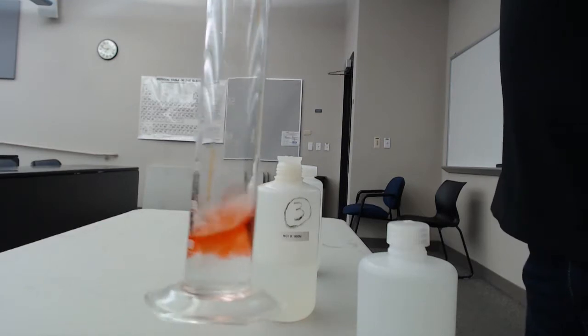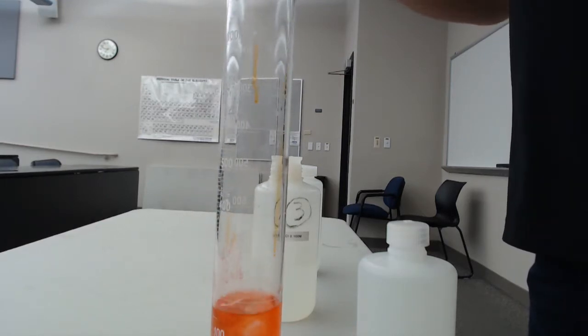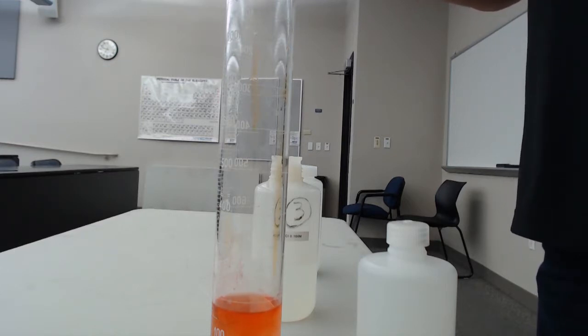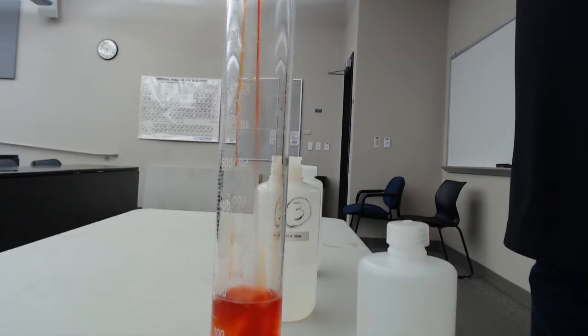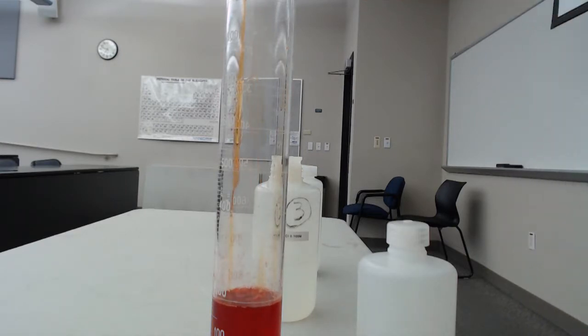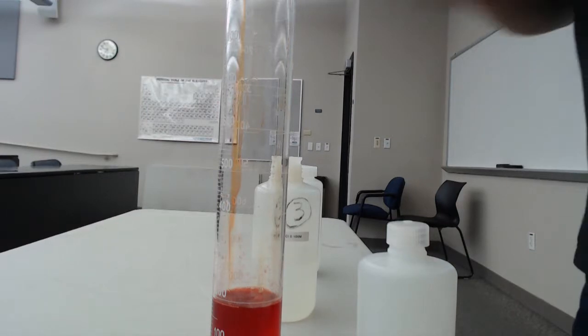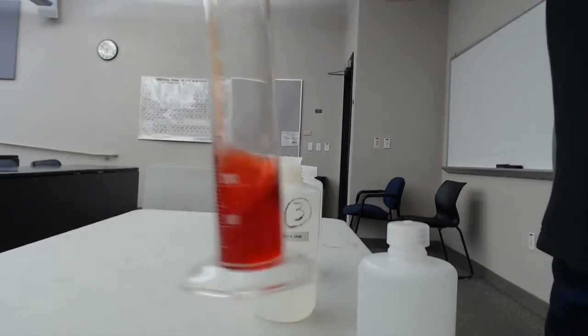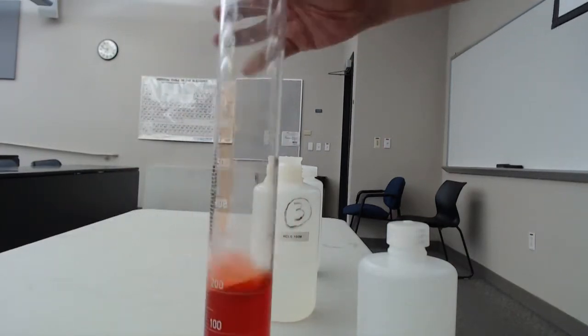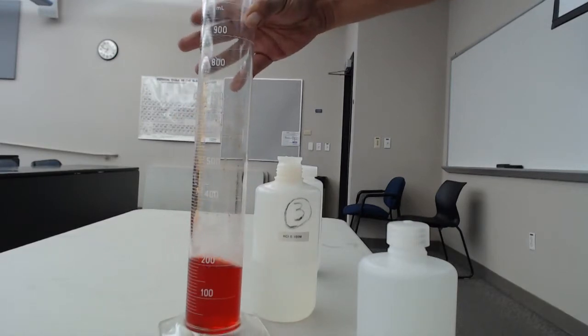I'm just gonna add enough in here so we can actually see it really deep color. You guys will learn about this a little bit more in 121, but how dark something is is a function of how concentrated it is. So if I add a little bit more in there it gets darker. It has a deep red color because it's pretty acidic.